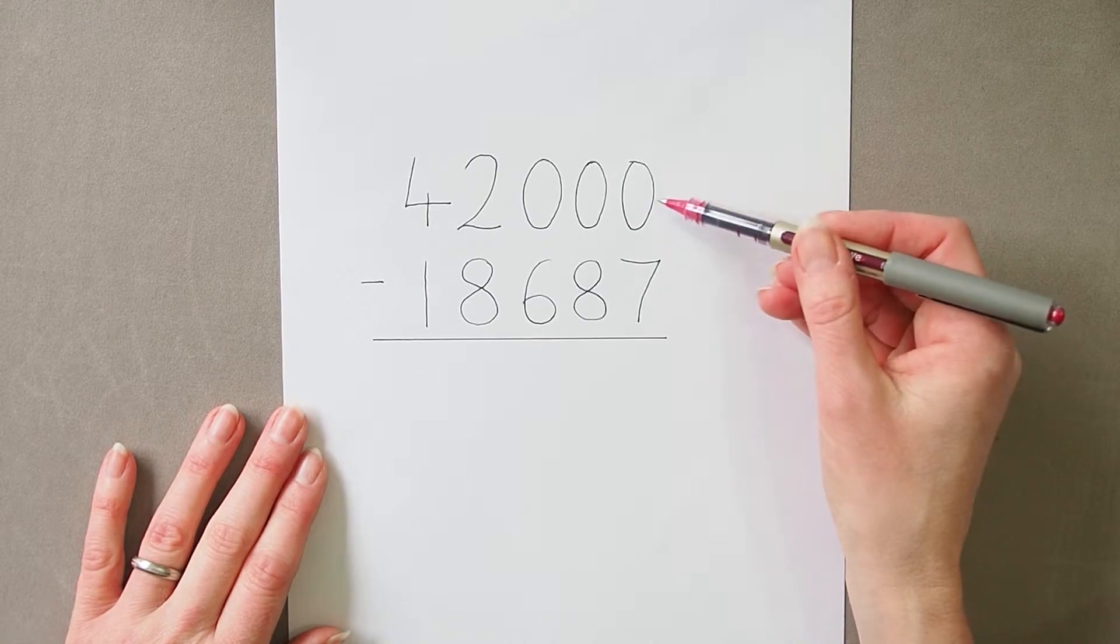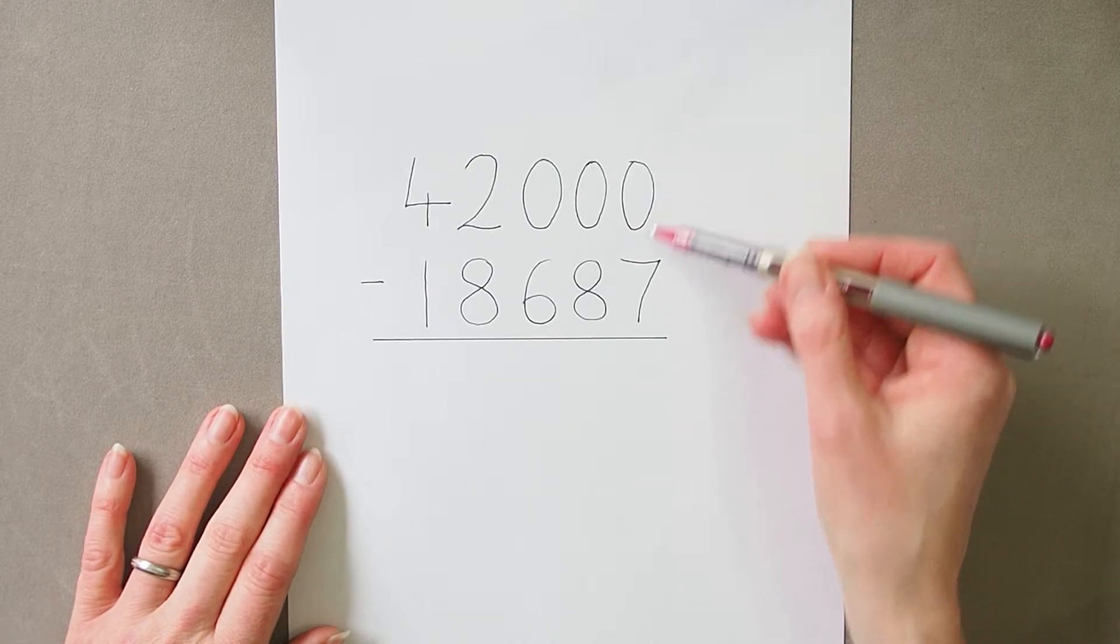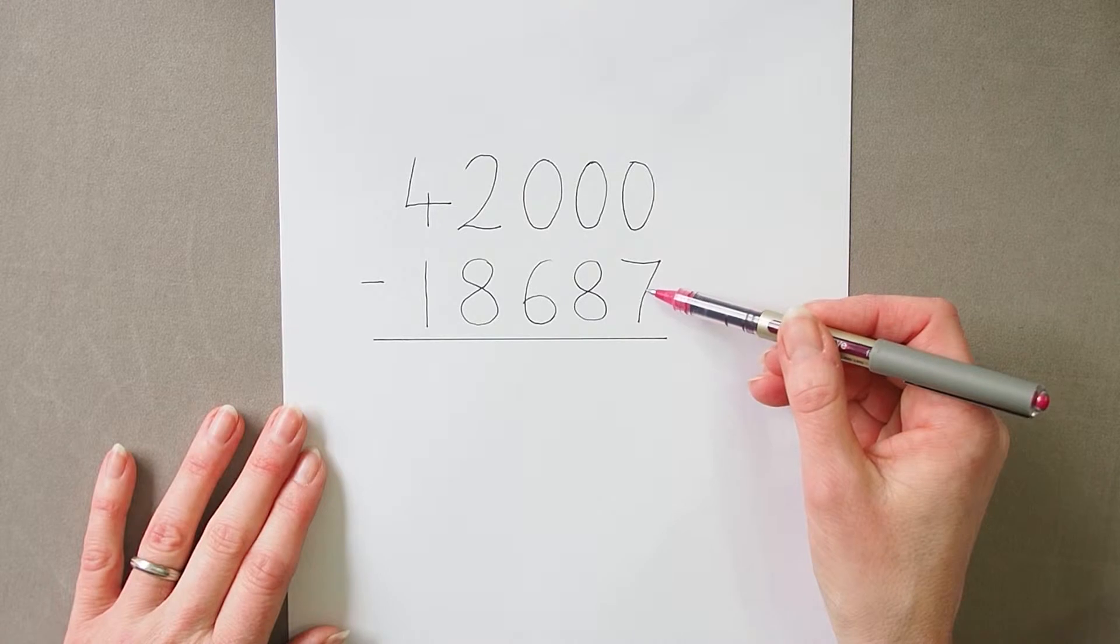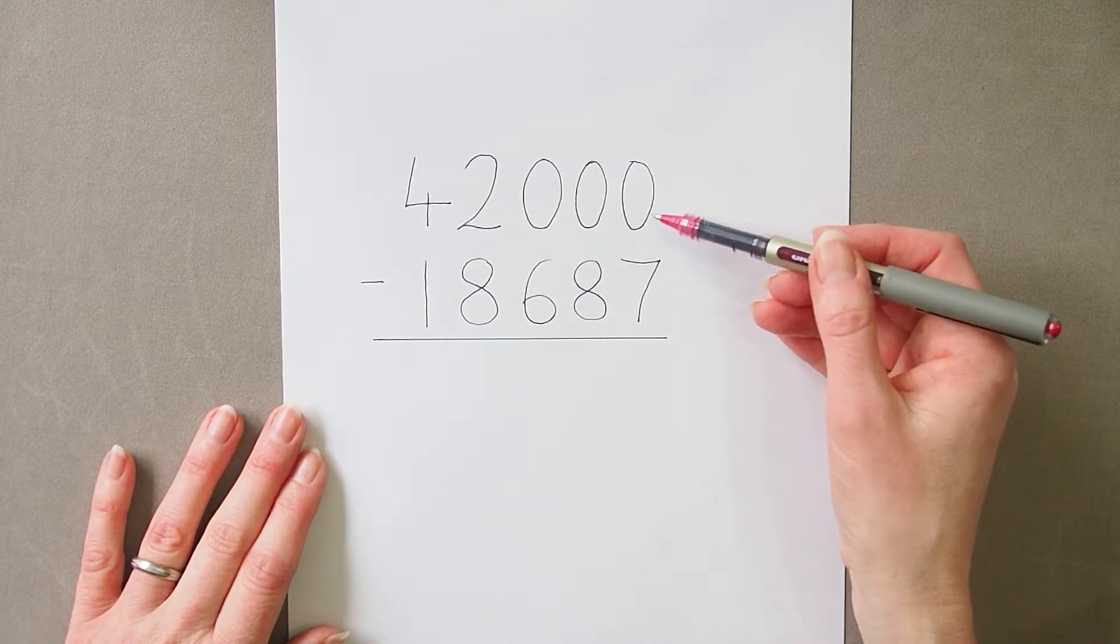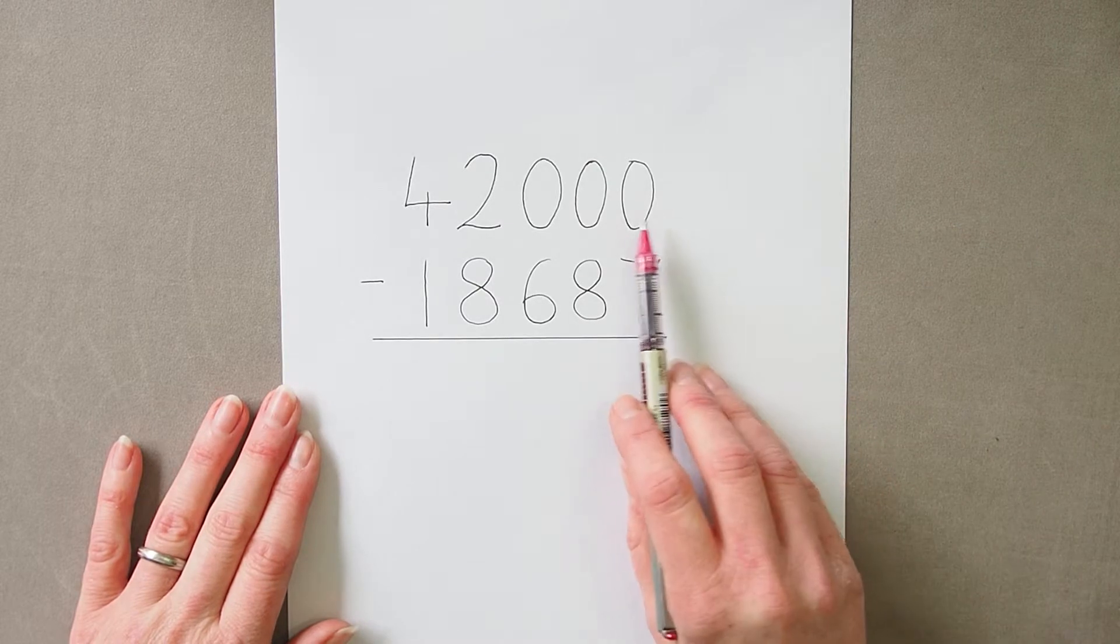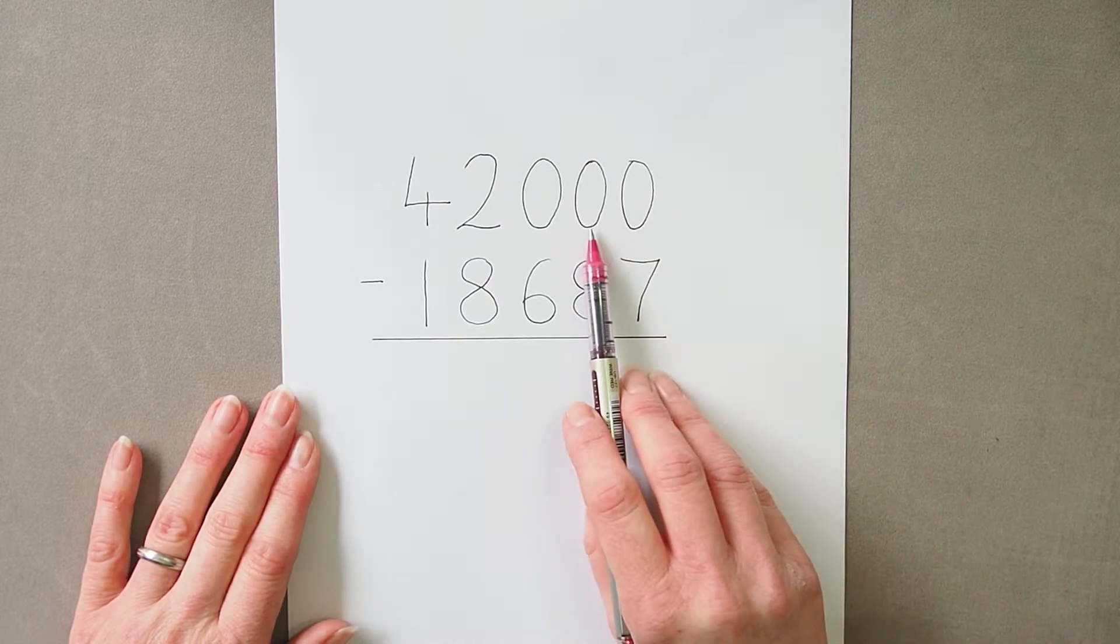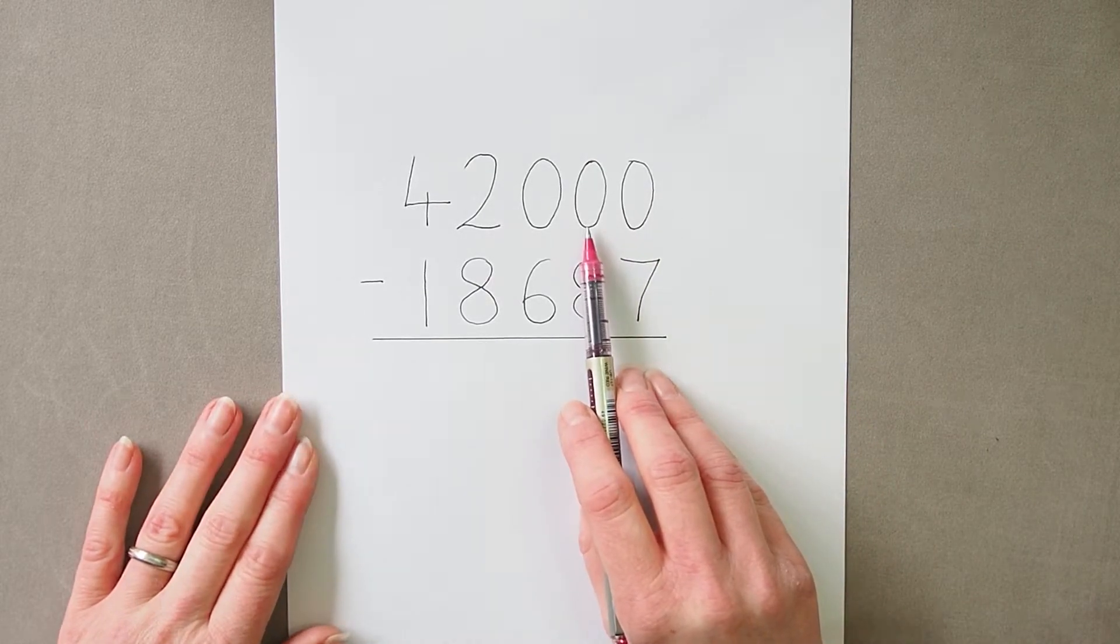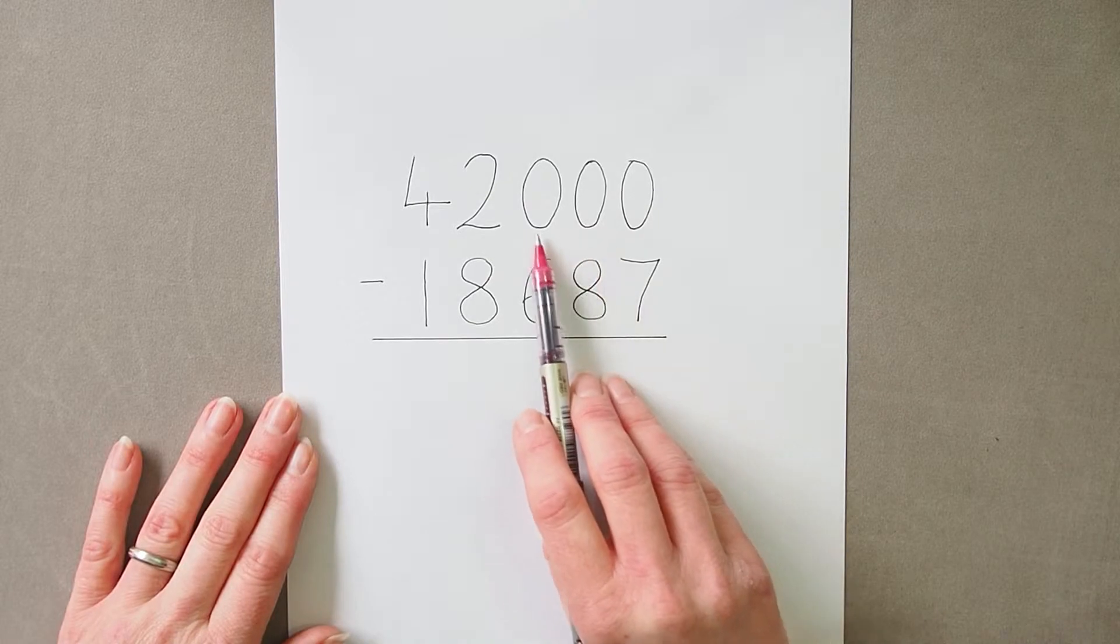So we start off with the units column, zero subtract seven. We need to actually have a few more units in there, so we need to exchange and we look at the next column, which is also a zero, so we can't exchange any tens and we go to the next column.